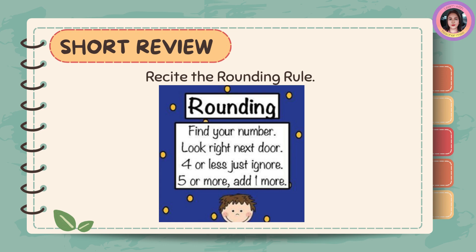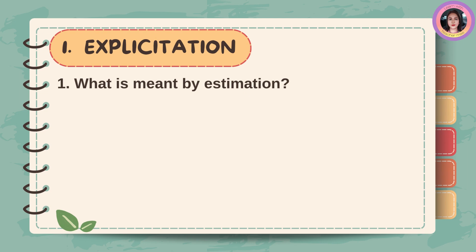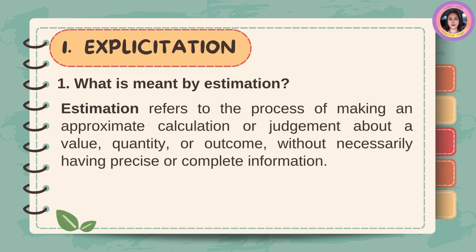Recite the Rounding Rule. What is meant by Estimation? Estimation refers to the process of making an approximate calculation or judgment about a value, quantity, or outcome without necessarily having precise or complete information.